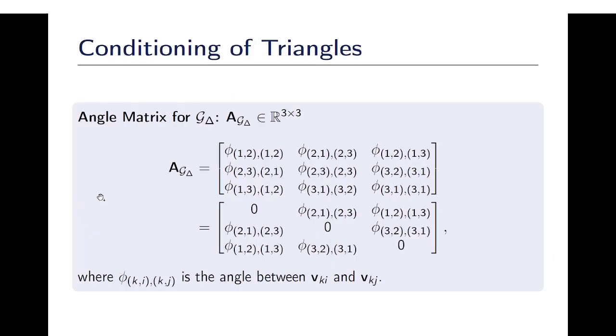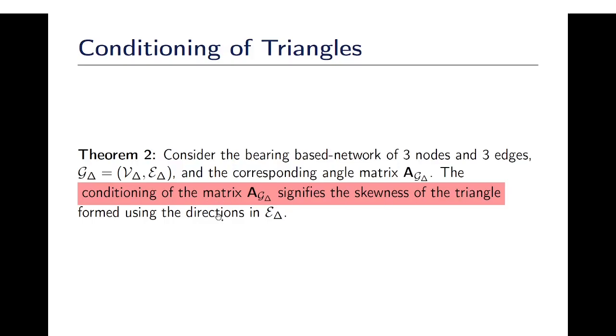To further analyze, we first construct an angle matrix where each row and column represents an edge and each entry represents angle between the two directions present in the edges. Given the angle matrix, this theorem suggests that the conditioning of the angle matrix signifies the skewness of the triangle.